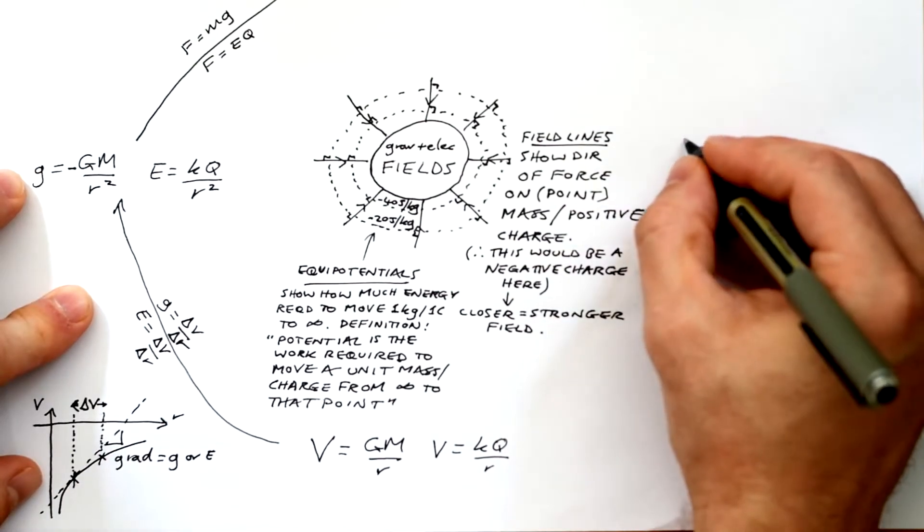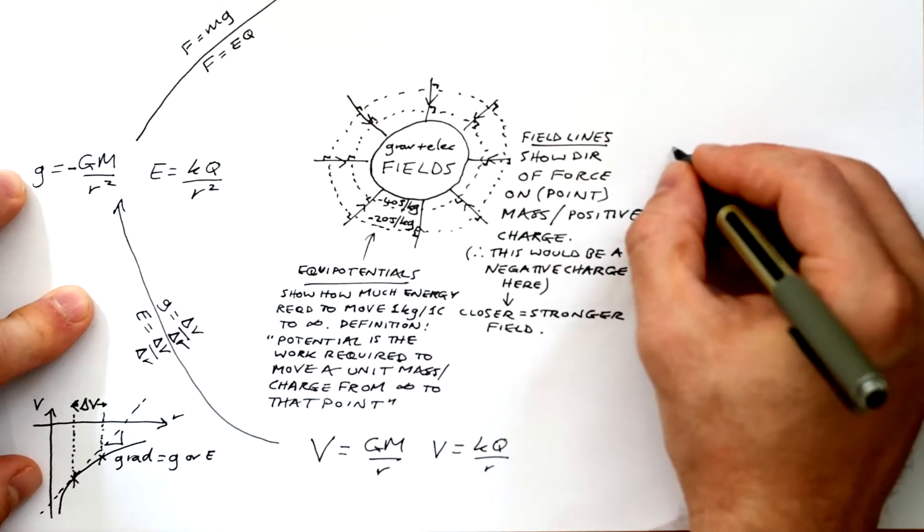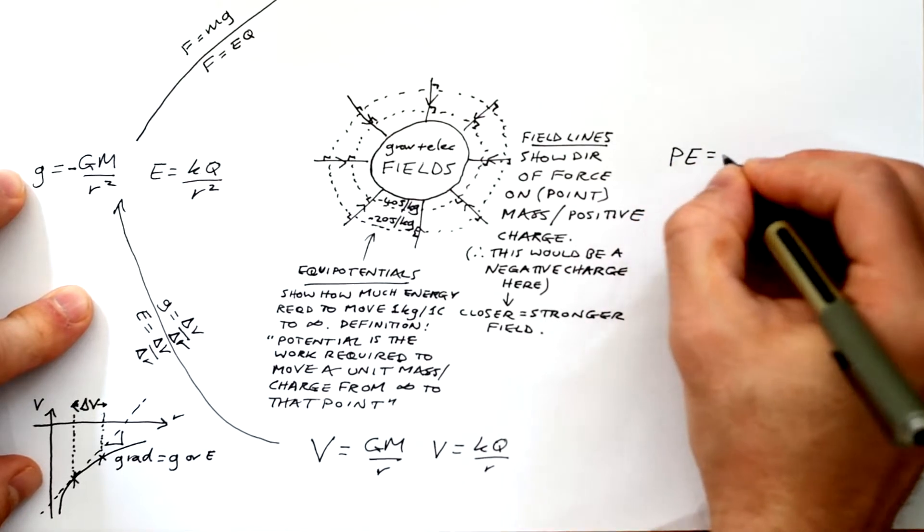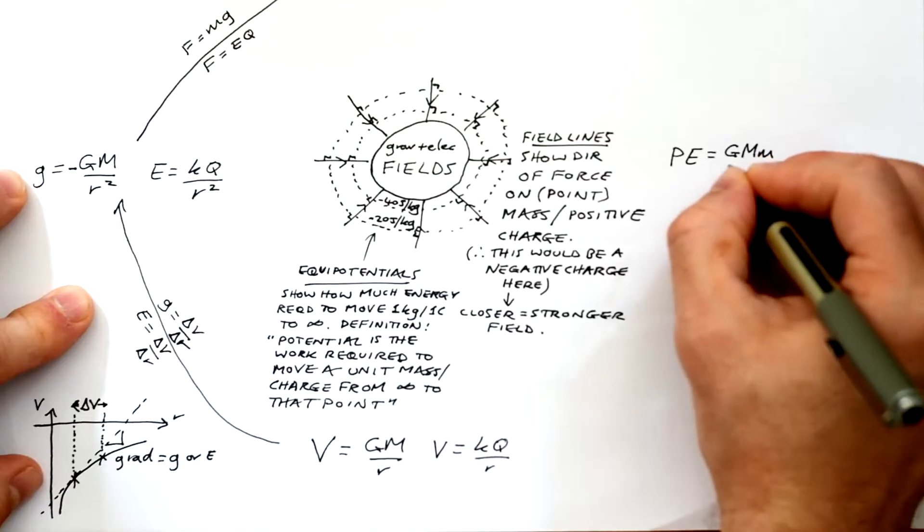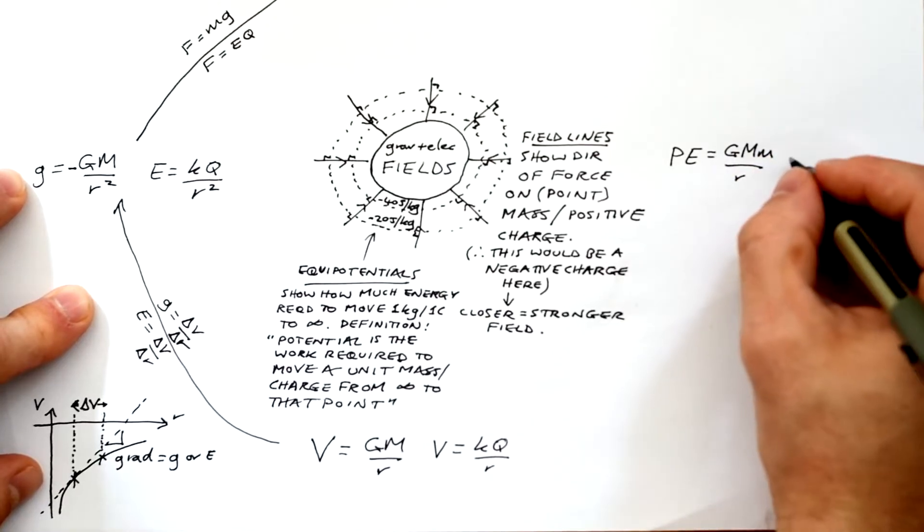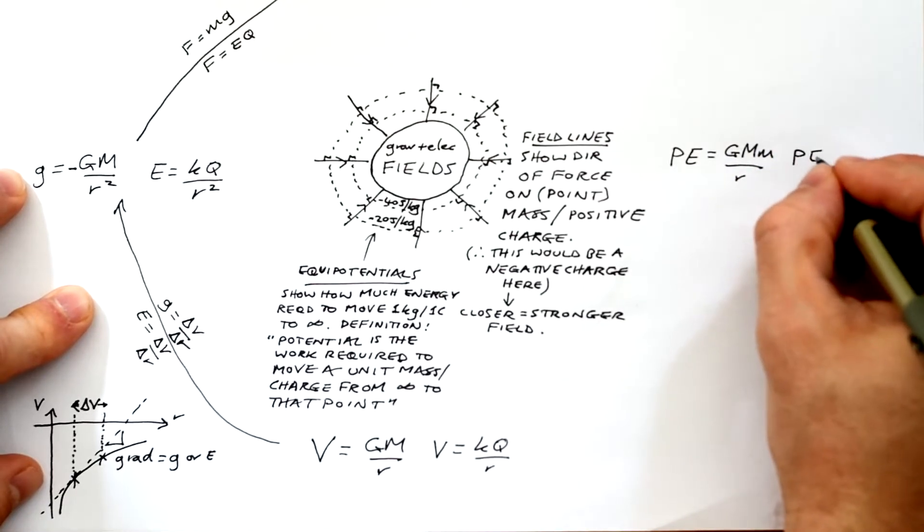Well, we can get a change in potential from the graph. And then we can get to potential energy from there. Now we're going to call potential energy PE. I'm not just going to call it E because we don't want to get confused between electric field strength and energy. Kind of wish I'd call it EP, but there we go.